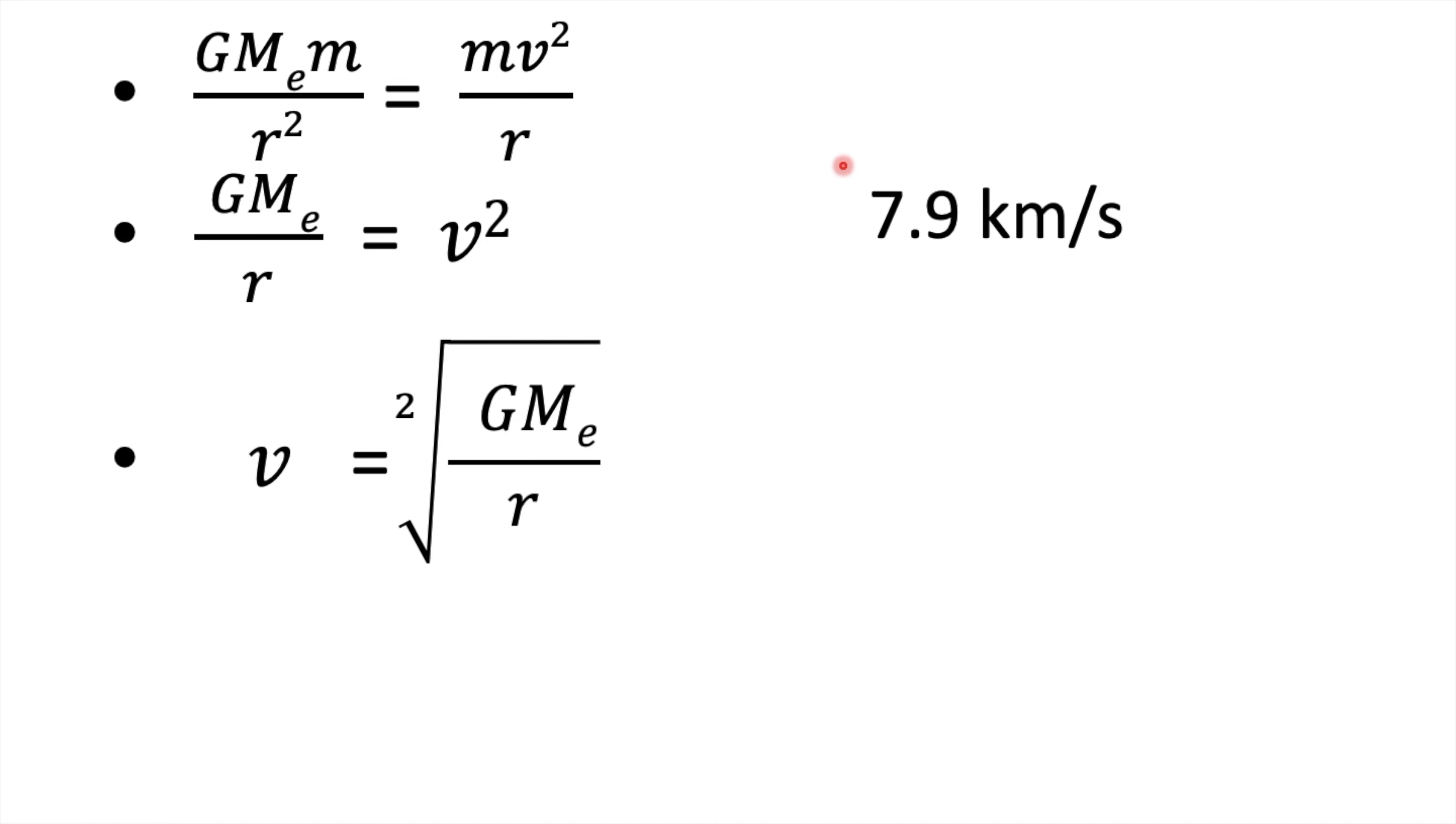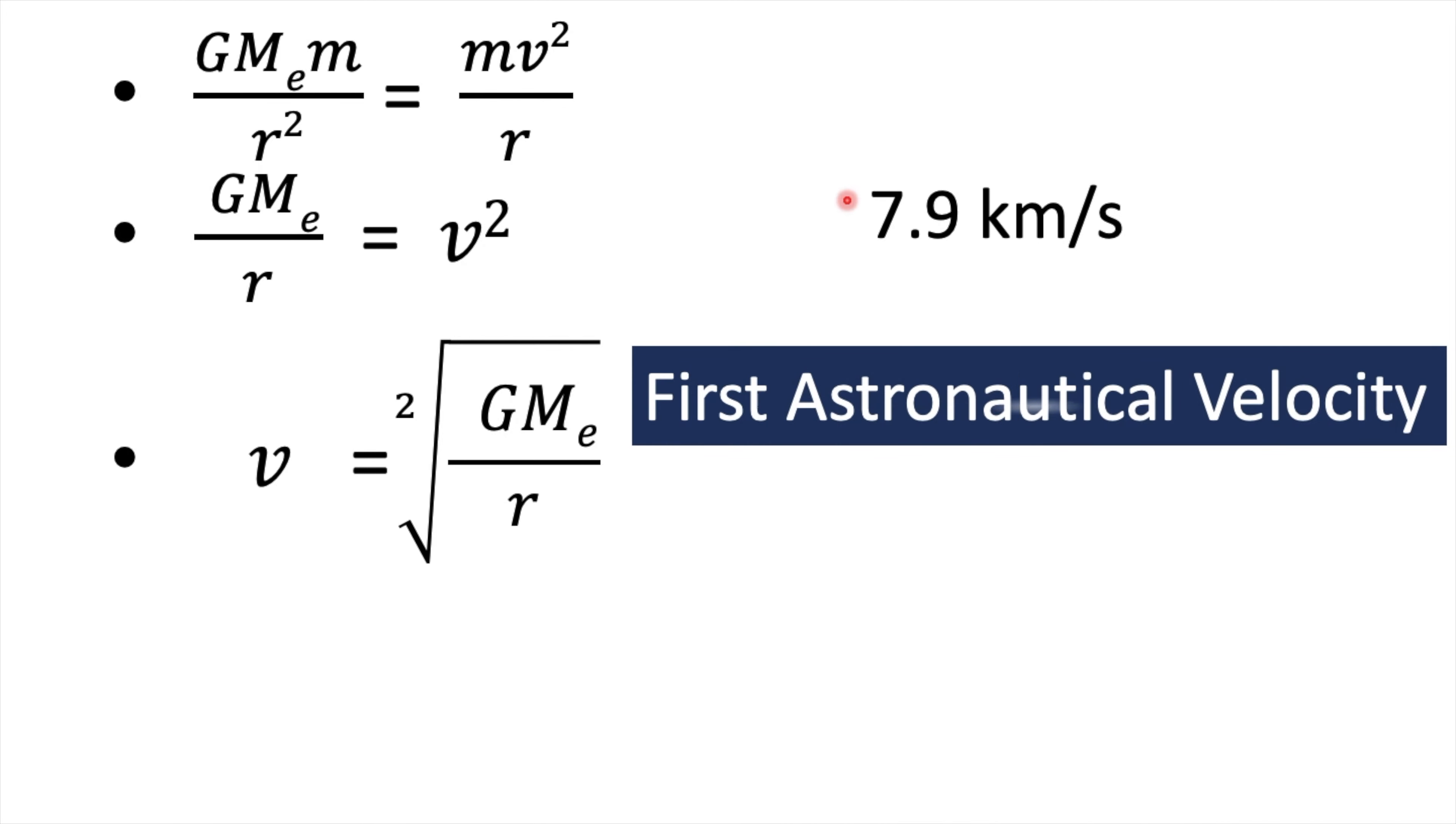So if you put the value of G, M_e, and r, then you will get this value: 7.9 kilometers per second. This velocity that an object requires to rotate around the earth surface or just near the earth surface is called the first astronomical velocity.